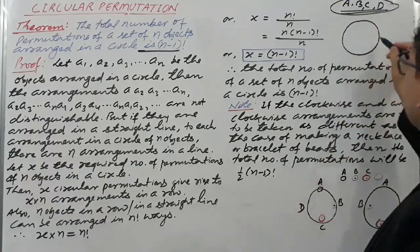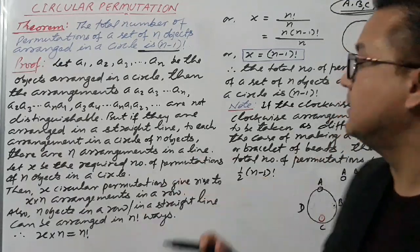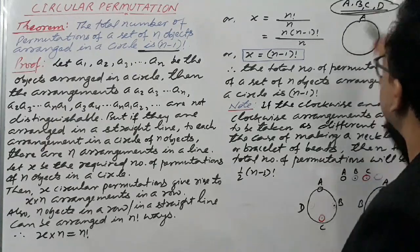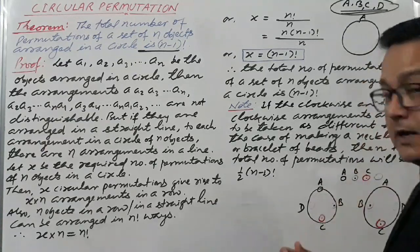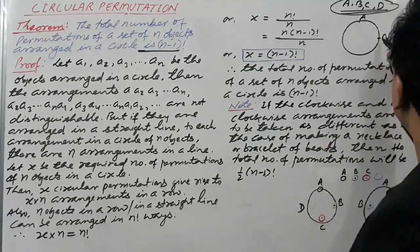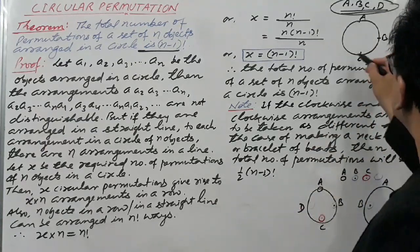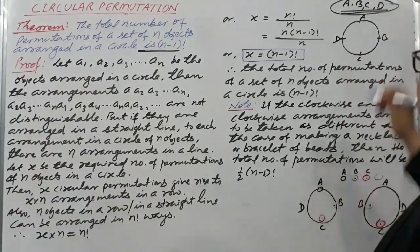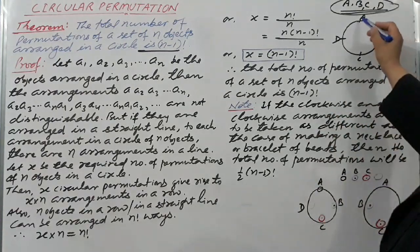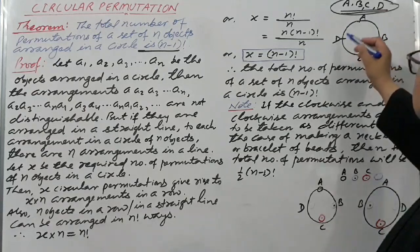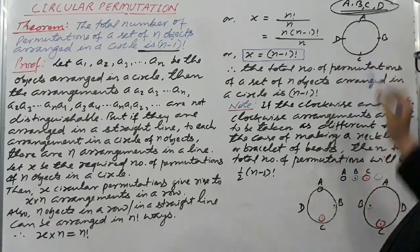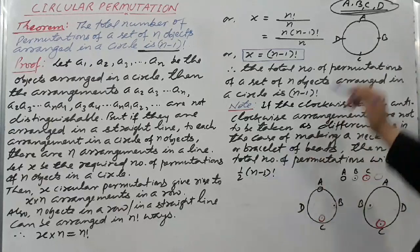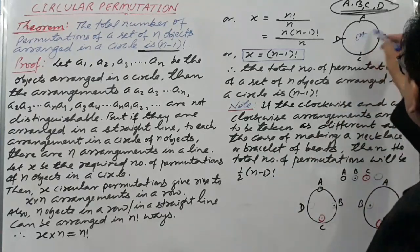This is a circle; we want to arrange them in a circle. First arrangement, you can do it like this: A, B, C, D — this will be your first arrangement.